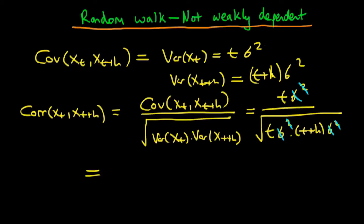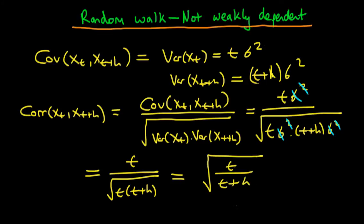So we have that the correlation of xt with xt plus h is equal to t divided through by the square root of t times t plus h, which we can actually write a little bit neater if we cancel a power of t with t to the half. So this is equal to the square root of t divided through by t plus h.